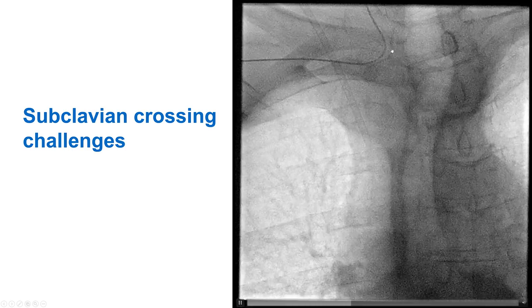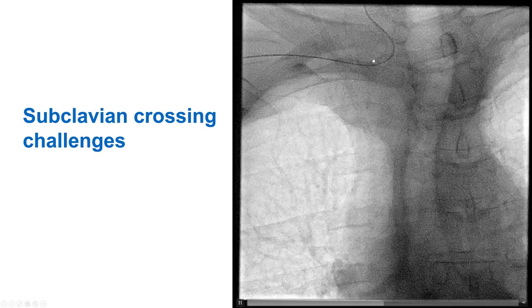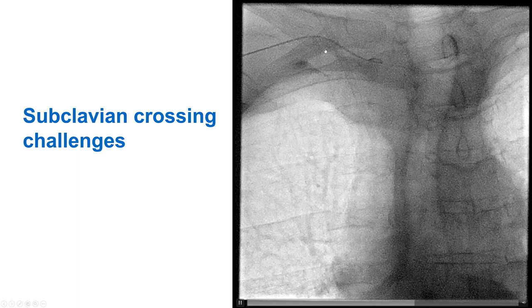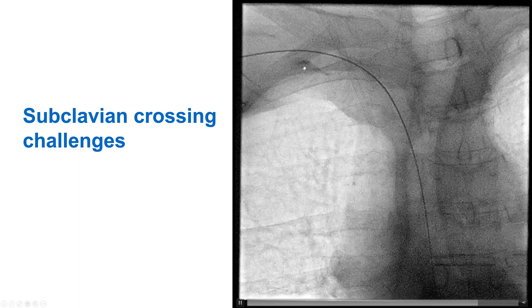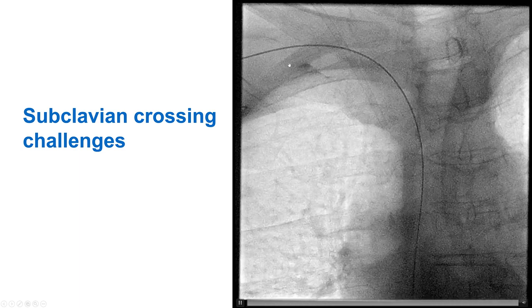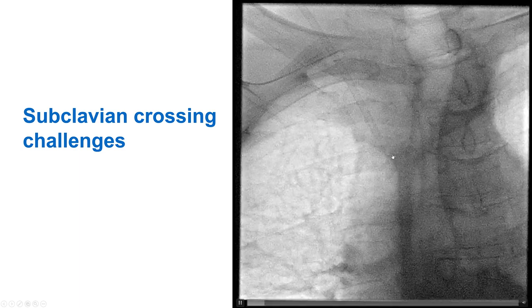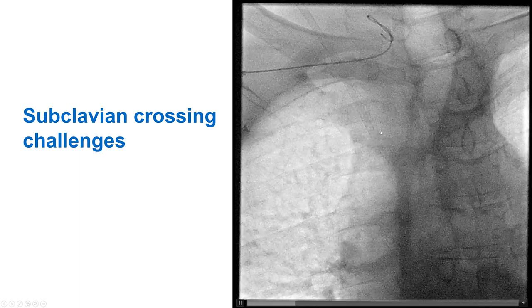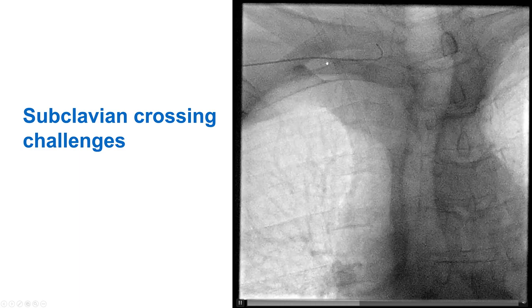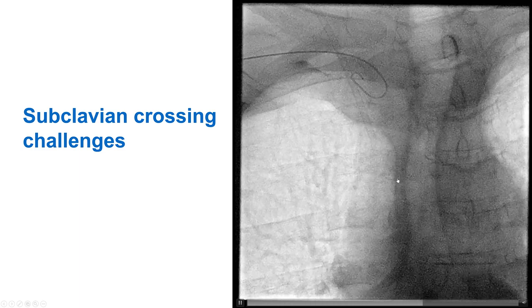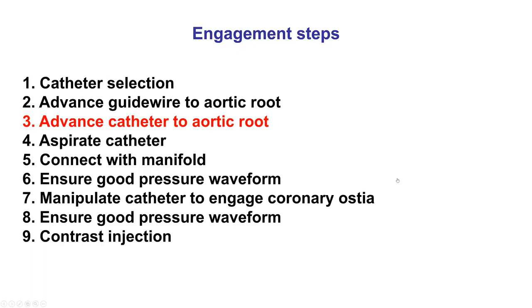Here is an example of difficulty getting through the subclavian — sometimes the wire preferentially goes into the carotid. Eventually, with pulling back, redirecting, and having the patient take a deep breath, entry of the wire into the ascending aorta was achieved.